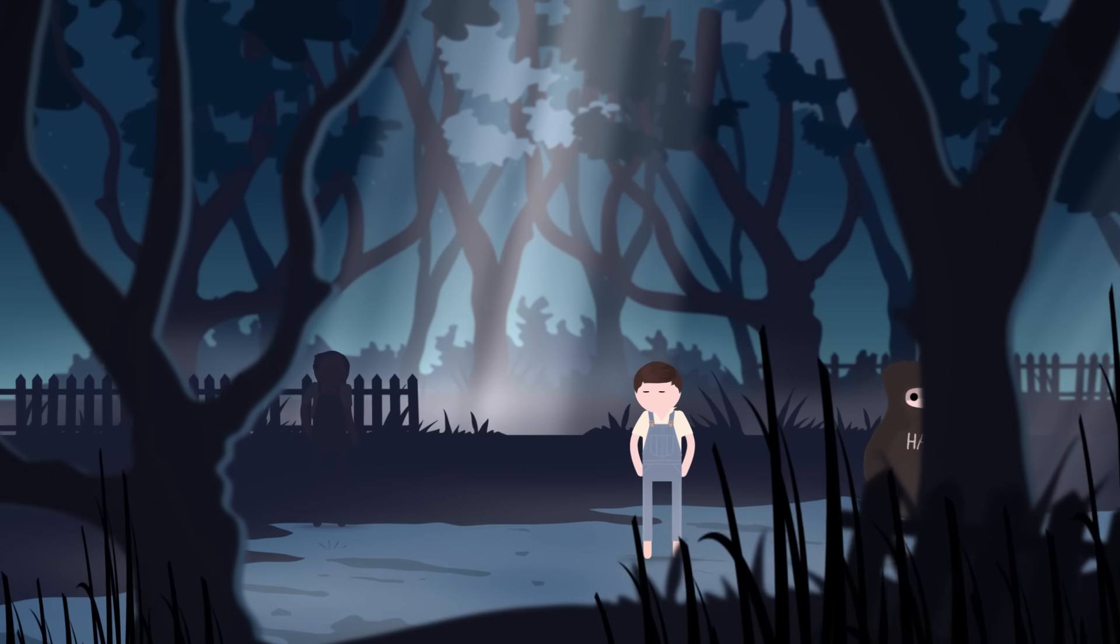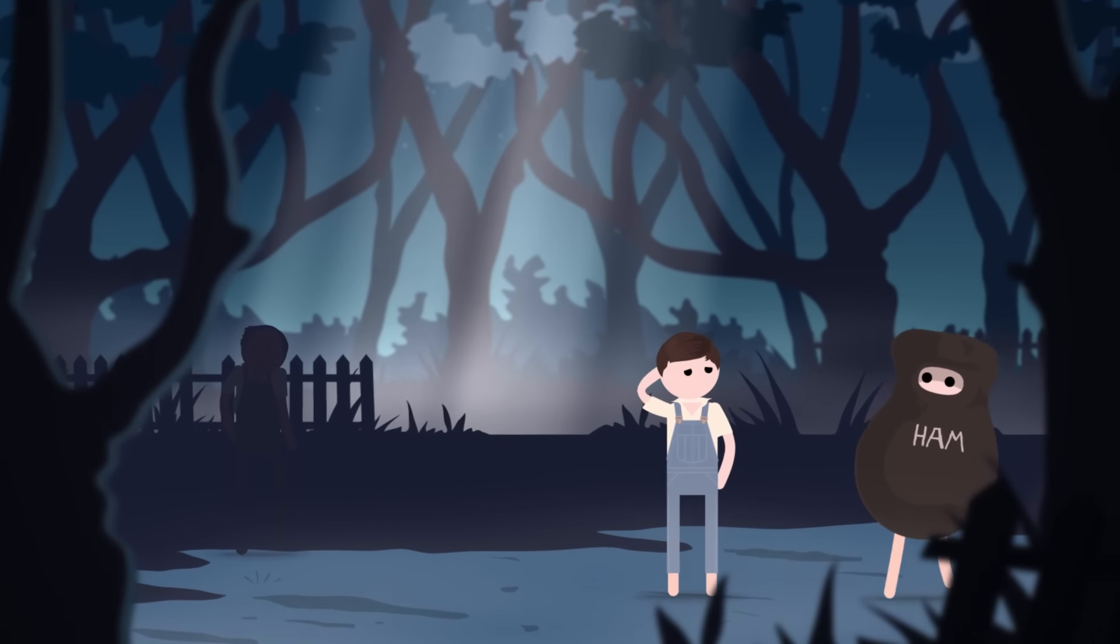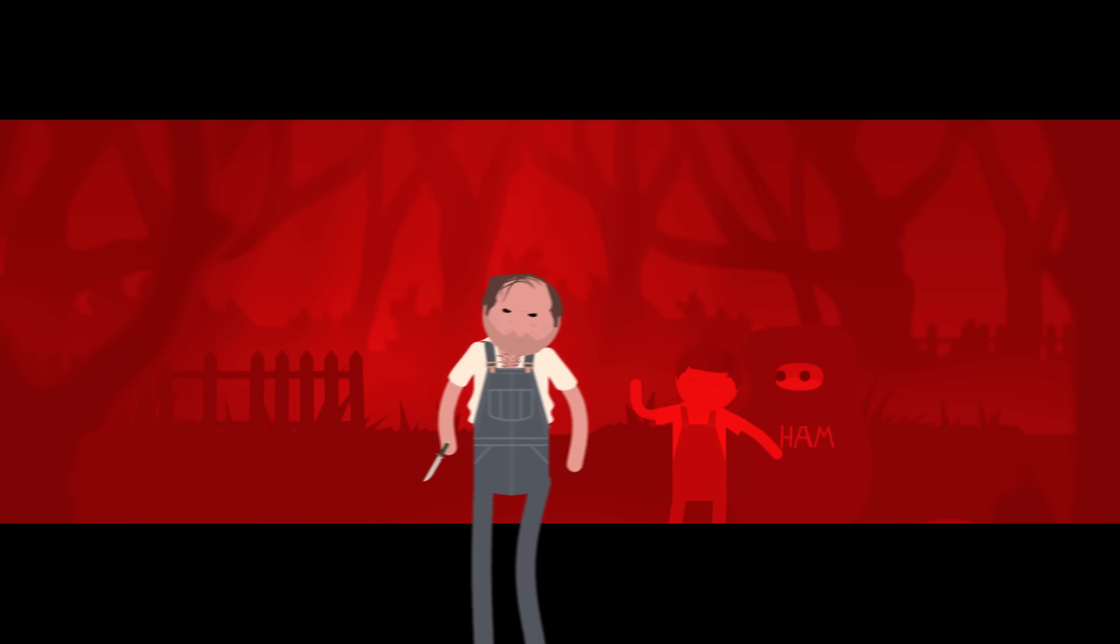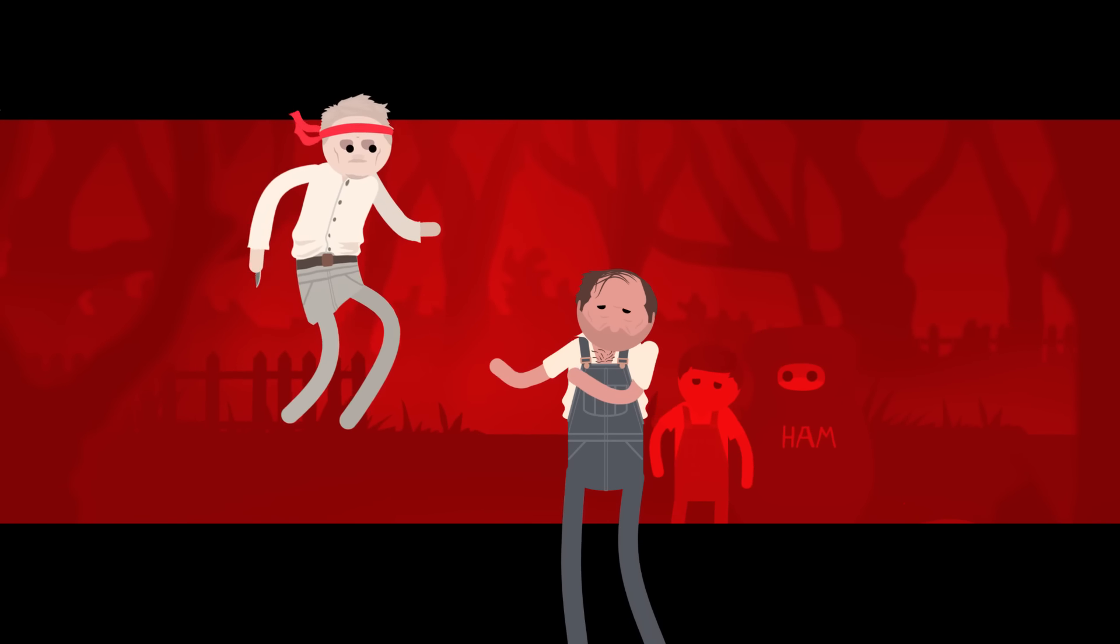Bob Ewell, the father of Mayella, is miffed at being ridiculed by Atticus in court. After spitting at Atticus, Ewell attacks his children. Boo Radley comes to the rescue and makes good on his history of stabbing people and the children are saved. Thanks, Thought Bubble.